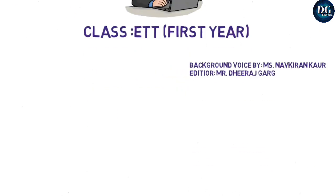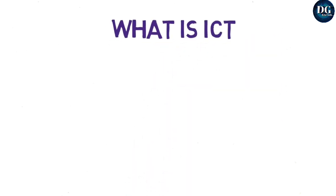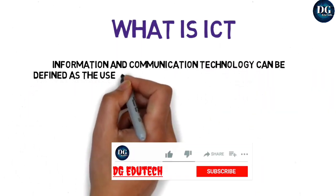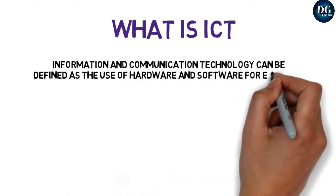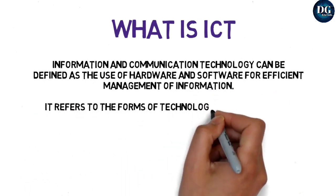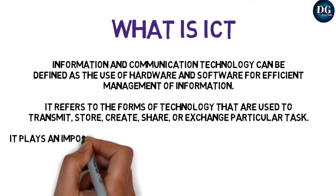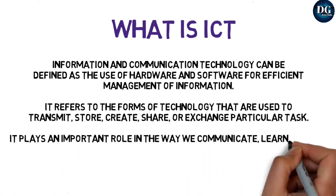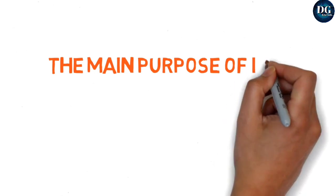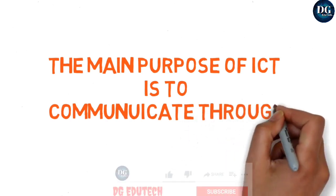First of all, what is ICT? ICT stands for Information and Communication Technology. In ICT, we use hardware and software for the management of information. We can transmit, store, create, and share information using technology in a very good way. ICT plays a very good role in learning, communication, and living. The main purpose of ICT is to communicate through technology.